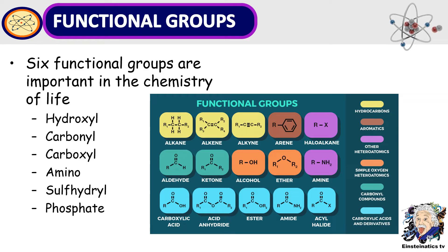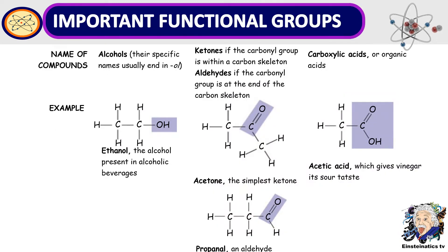There are six functional groups important in the chemistry of life: hydroxyl, carbonyl, carboxyl, amino, sulfhydryl, and phosphate. Examples of important functional groups include alcohols, ketones, aldehydes, and carboxylic acids, including acetone and acetic acid. If you look at all of these functional groups, they all contain carbon.